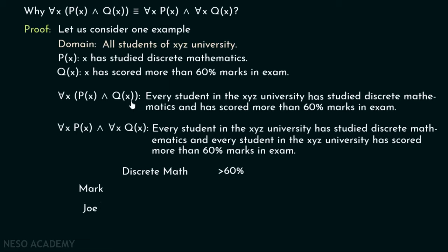Assume the statement 'every student in XYZ university has studied discrete mathematics and has scored more than 60 percent marks in exam' is true. Since Mark and Joe are the only students, this means Mark has studied discrete mathematics and scored more than 60 percent marks, and Joe has also studied discrete mathematics and scored more than 60 percent marks.